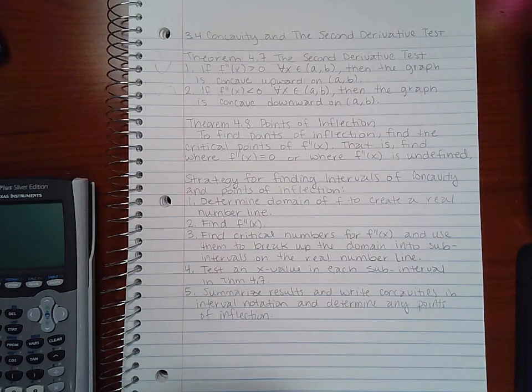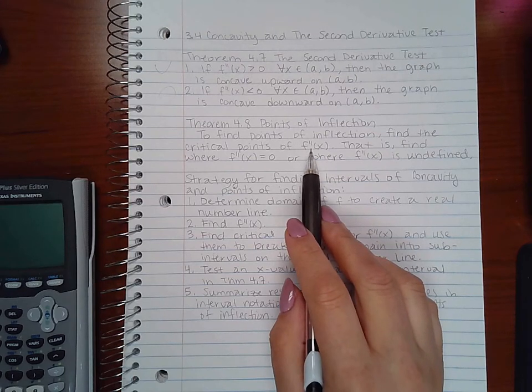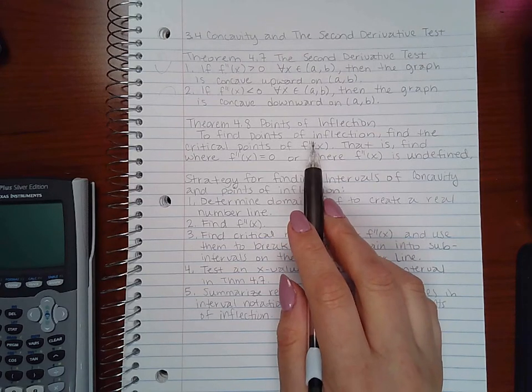So to find the points of inflection, find the critical points of f double prime. Normally we've always been doing the critical points from f prime.